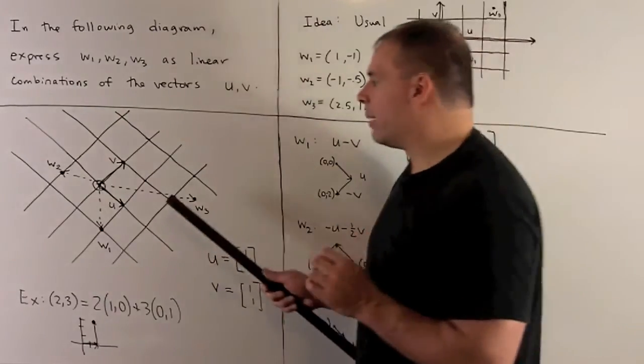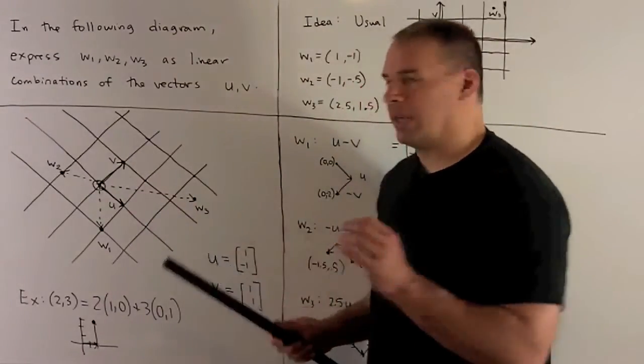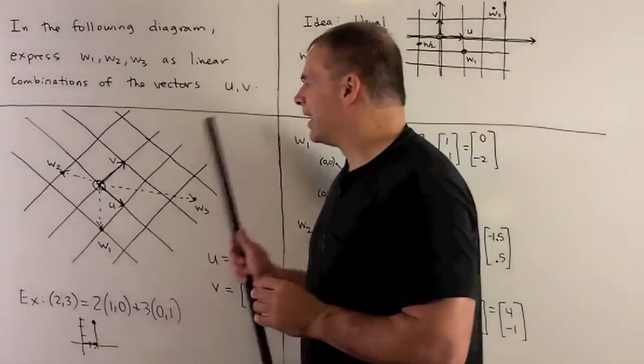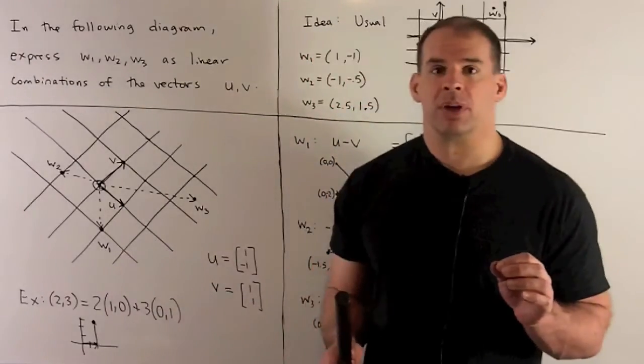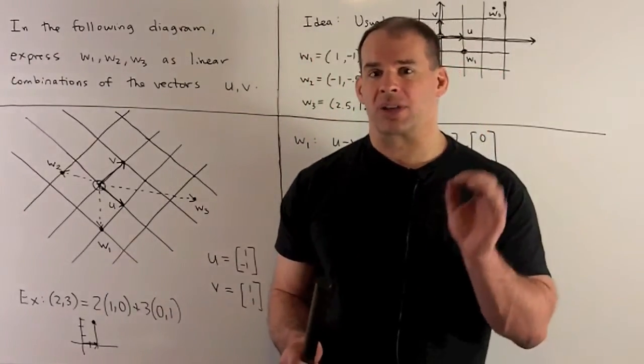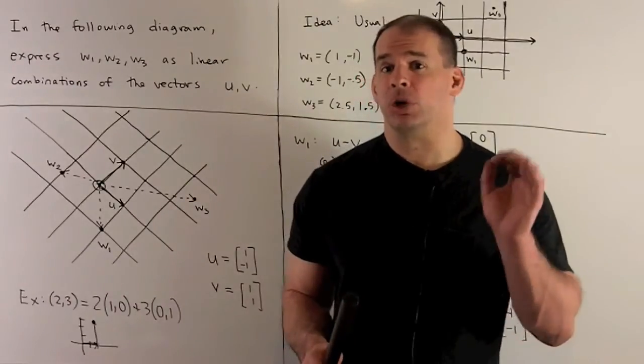Now, if we take all multiples of u, that'll give me a u-axis. We take all multiples of v, that gives me a v-axis. So what we're going to do is trade in our x, y plane for a u, v plane.